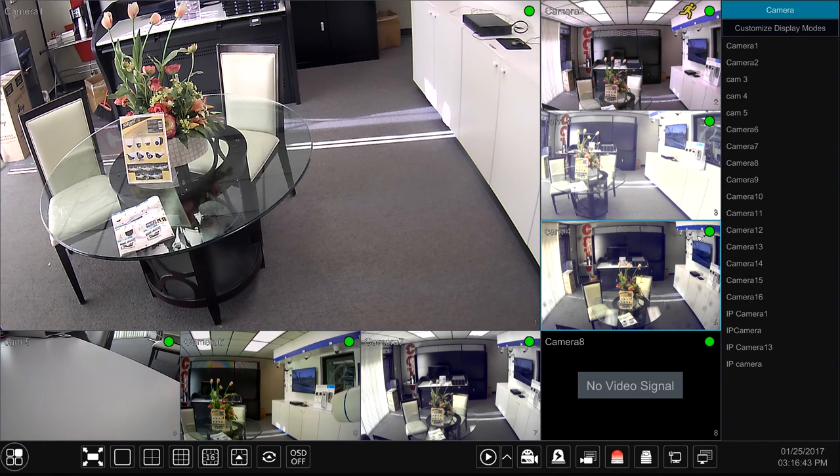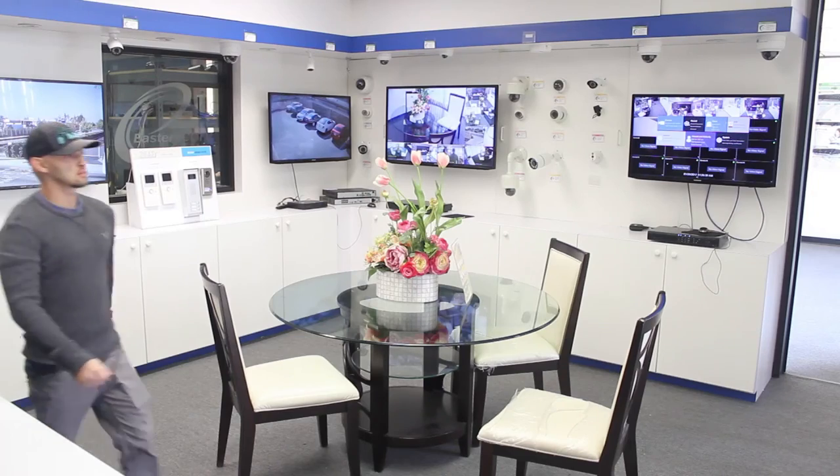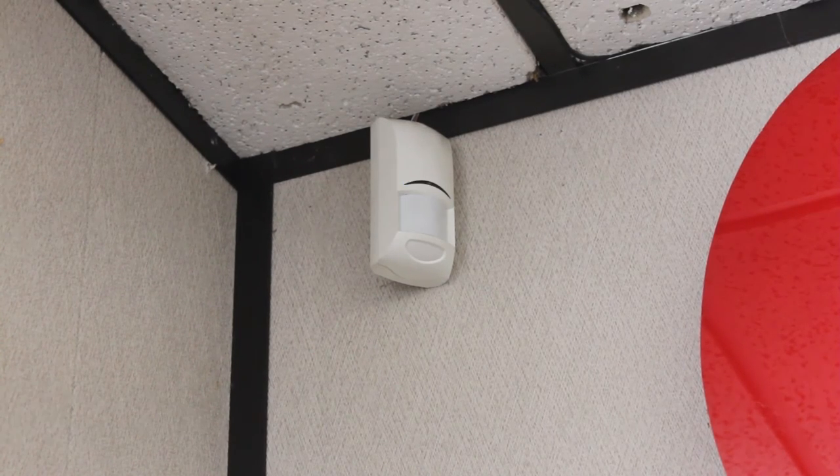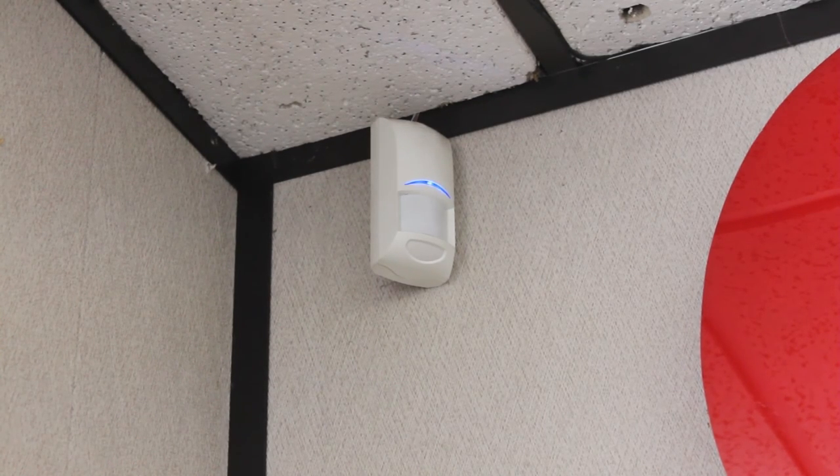If someone passes by or walks by the sensor, it will trigger the alarm. This will be an example how the alarm will get triggered. Somebody is walking by, and then the sensor gets triggered. And this is what you will get in your DVR or NVR.